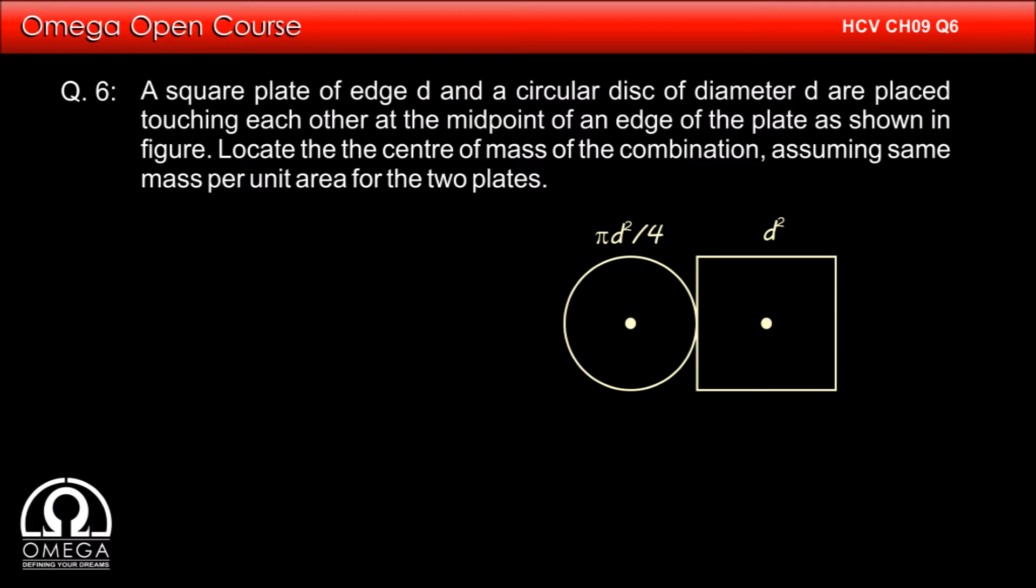A square plate of edge d and a circular disc of diameter d are placed touching each other at the midpoint of an edge of the plate as shown in the figure. Locate the center of mass of the combination, assuming the same mass per unit area for the two plates.